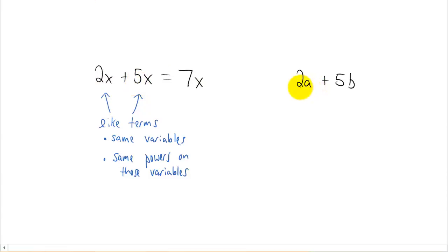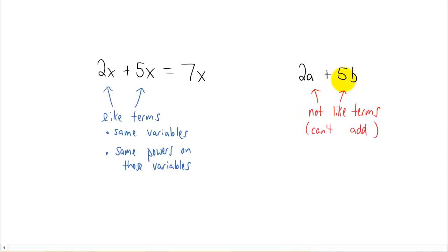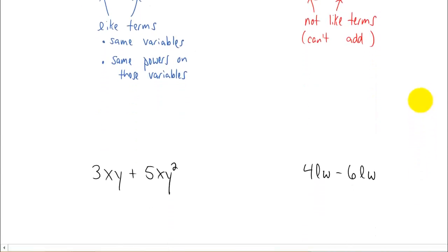So just as another example, if you had something like 2a and 5b, these are not like terms. So we're not allowed to add these two terms together into one term. To give you a couple more examples, let's look at this one.